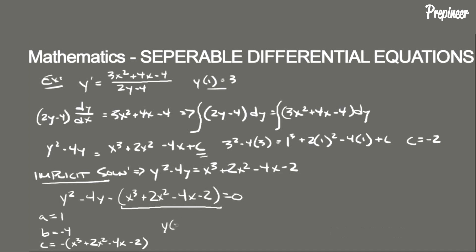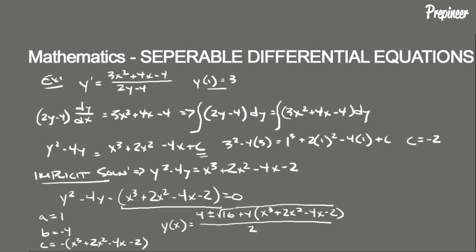Plugging into the quadratic formula, we get y(x) equal to 4 plus or minus the square root of (16 plus 4 times (x cubed plus 2x squared minus 4x minus 2)), all divided by 2.